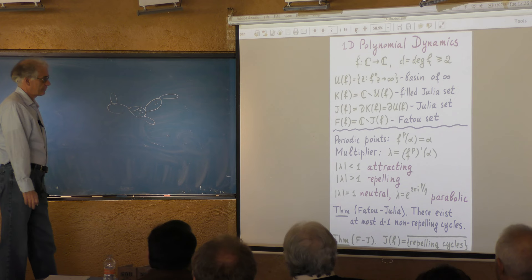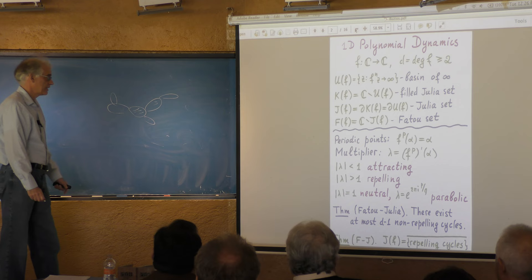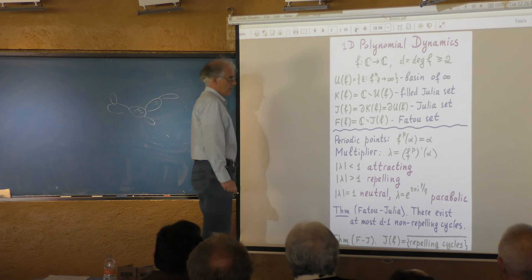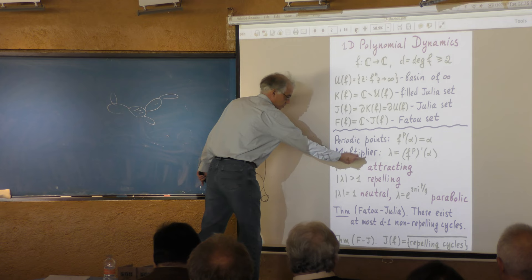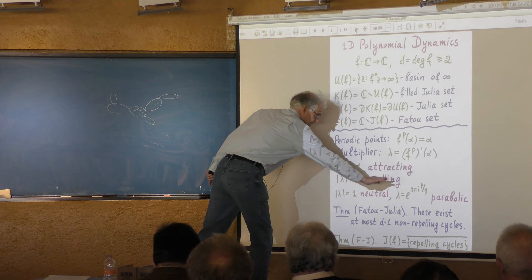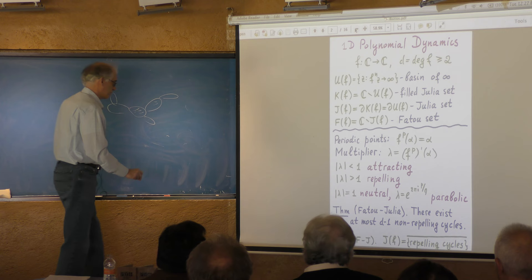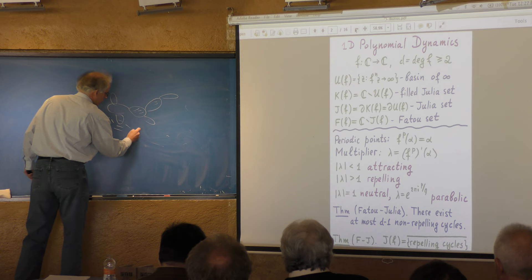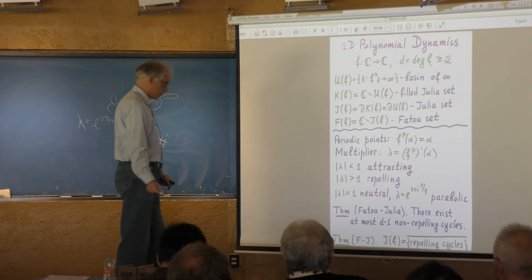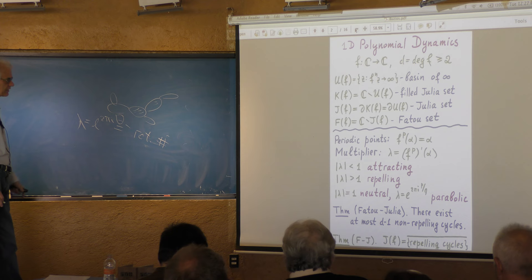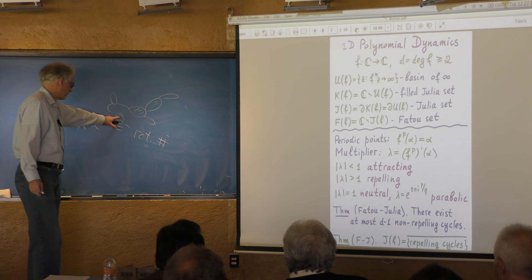The theory is very much related to the nature of periodic orbits present in the dynamics. The orbits are classified according to the values of the multiplier. If the multiplier is less than one in absolute value, the point is attracting; if it is greater than one, it is repelling. The most delicate case is the neutral case, when the multiplier has absolute value equal to one. It can be written in exponential form with a rotation number, and if the rotation number is rational, the point is called parabolic; otherwise it is called irrational — and the nature of the dynamics depends very strongly on the arithmetic of this rotation number.